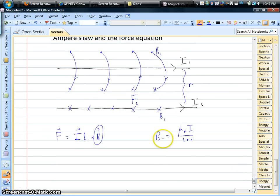Okay, so B1, the magnetic field from the top current, is μ₀ times I1 all over 2π times the distance between the wires.